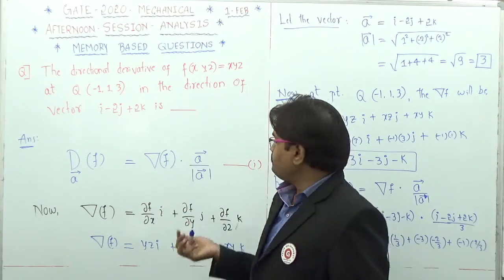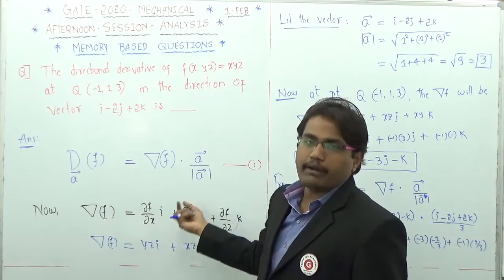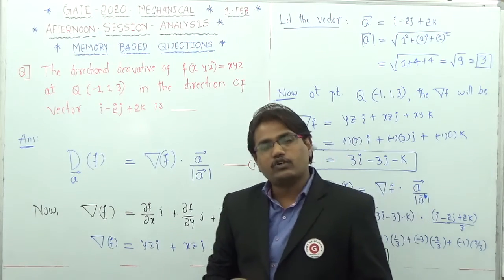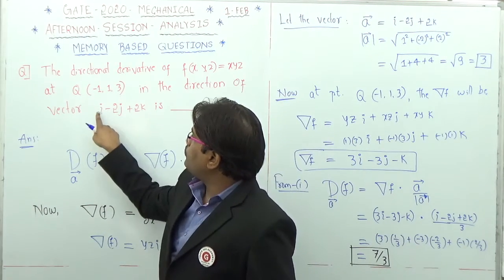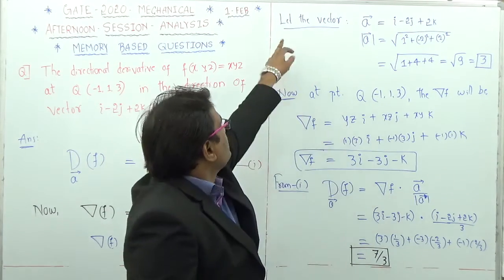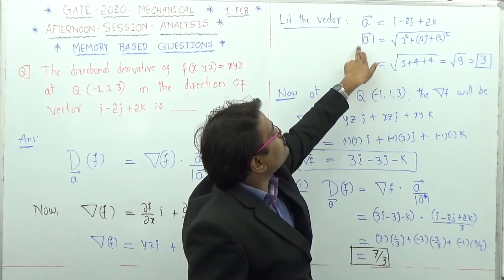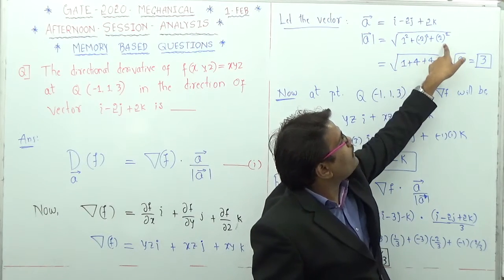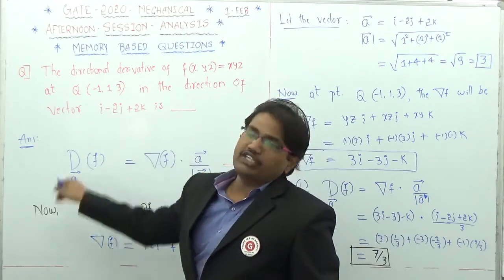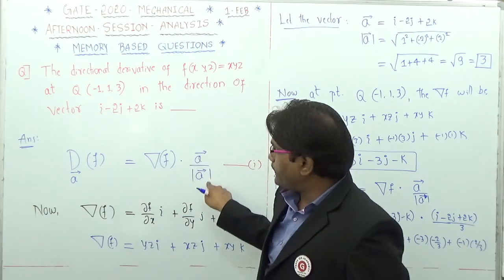The next part is to find the magnitude of the given direction vector i - 2j + 2k. The magnitude is the square root of 1 squared plus (-2) squared plus 2 squared, which equals the square root of 1 + 4 + 4, that is the square root of 9, which equals 3. So the magnitude of the vector is 3.